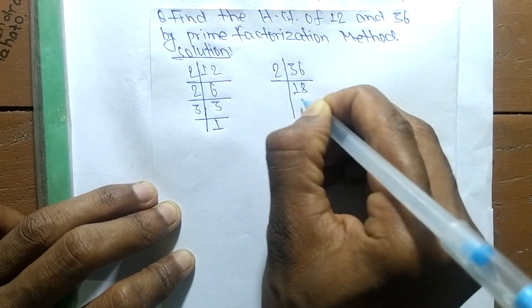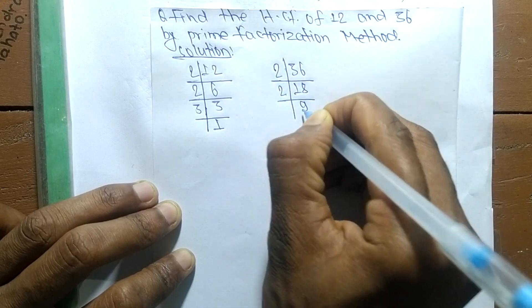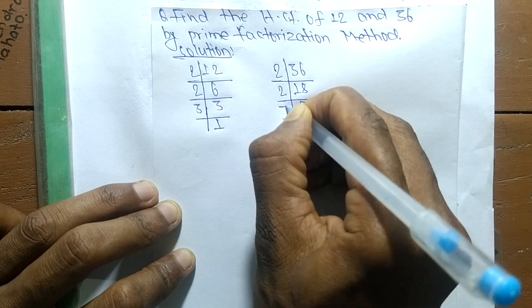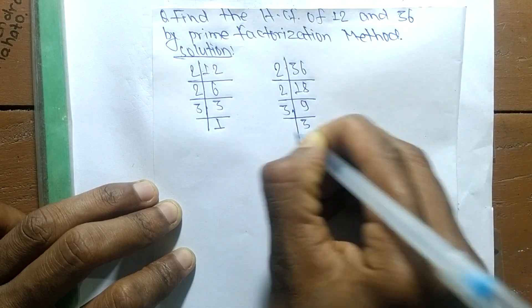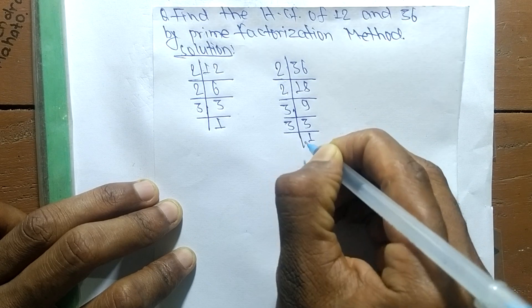It is 2 times 18 equals 36, 2 times 9 equals 18, 3 times 3 equals 9, and 3 times 1 equals 3.